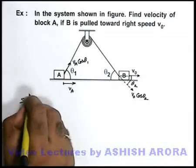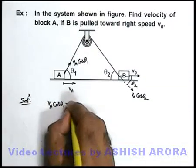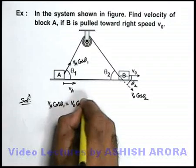So in this situation we can directly state: vₐ cos θ₁ must be equal to v₀ cos θ₂.